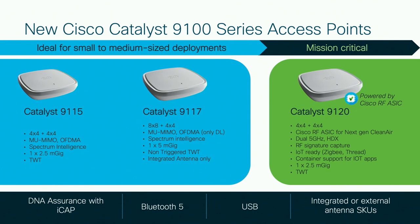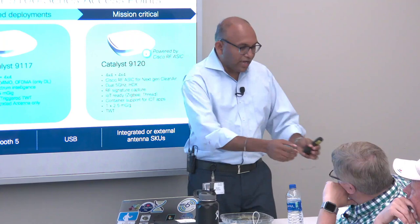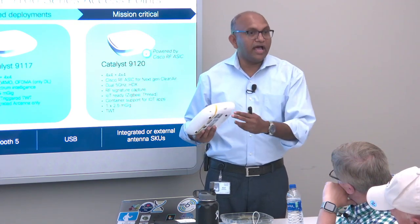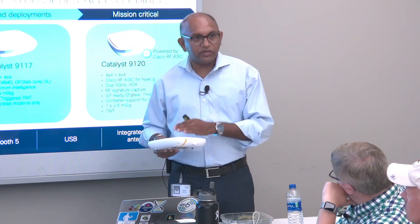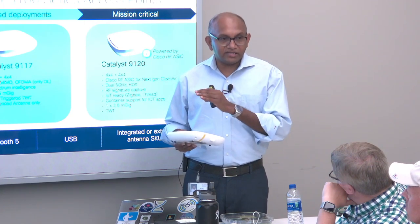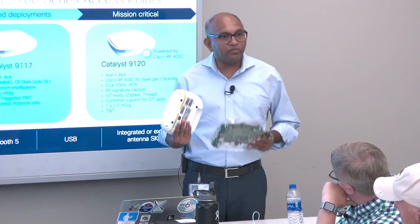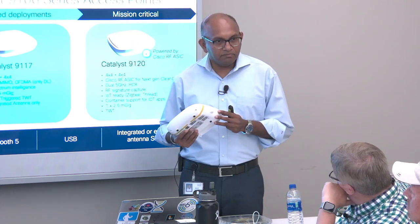On IoT readiness and Zigbee: the AP has the built-in radio — not modules. Looking at the 9120, it has a USB port for future use, but for Zigbee and Thread you don't need anything additional — it's all built in. It has multiple radios: the 2.4 GHz and 5 GHz radios, the Zigbee radio, a BLE radio, and a third radio — the RF ASIC — which helps with passive monitoring in your network, including packet capture.